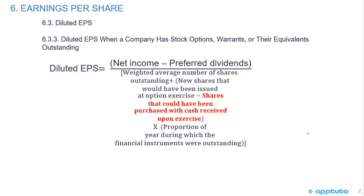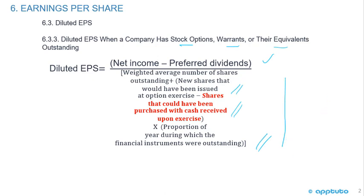We're carrying on with diluted earnings per share when a company has stock options, warrants, or their equivalents outstanding. The diluted EPS has net income minus preferred dividends in the numerator, but in the denominator it's the weighted average shares outstanding plus new shares that would have been issued at option exercise, minus shares that could have been purchased with cash received upon exercise, times the proportion of the year the financial instruments were outstanding. It's a new calculation that takes a little practice to master.